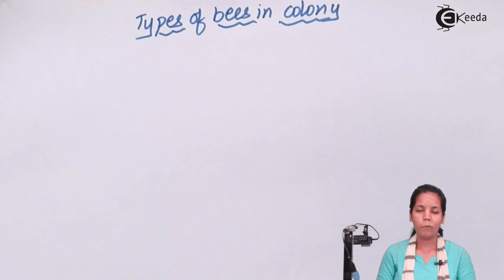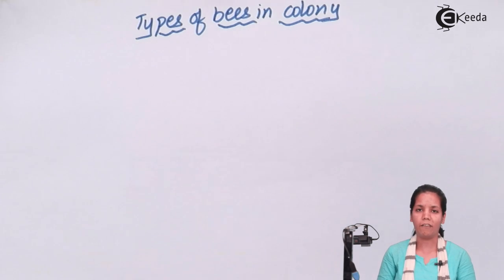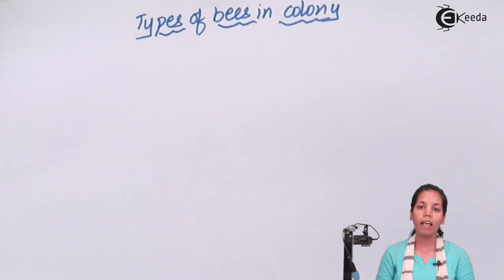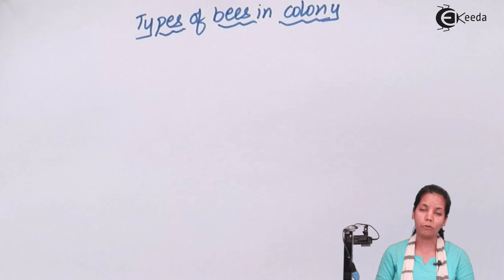The honeycomb, or simply the hive, is the home for three different kinds of honey bees: the queen bee, the male or the drone, and the worker bee.